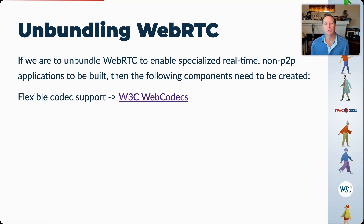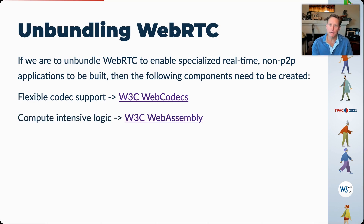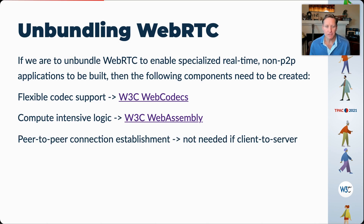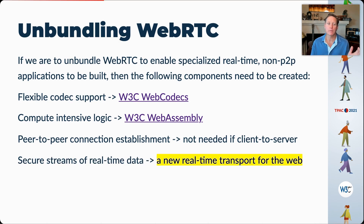If we could unbundle WebRTC, we could build really specialized real-time applications. For that to happen, we need flexible codec support because codecs are baked into the WebRTC stack — and for that we have the W3C WebCodecs initiative. We need compute-intensive logic, especially around encoding — for that we have W3C WebAssembly. We need peer-to-peer connection establishment, but we can actually avoid it because most applications out there, even video conferencing ones, in fact operate in a client-to-server mode. We carry a lot of overhead establishing a P2P connection when we could have a much faster and simpler client-to-server connection. And then lastly, we need a way to send secure streams of real-time data — and that brings us to a new standardized real-time transport for the web.